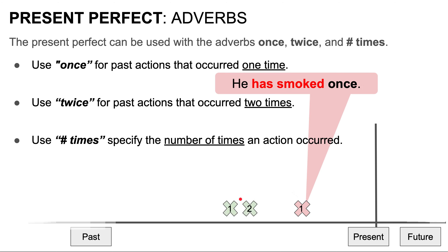Now we're going to look at adverbs of frequency that work with the present perfect. We use always for past states that continue or for past actions that routinely continue. For example, he has always wanted a car — that's a past state that continues. He has always called his mom — that's a past action that routinely continues. We use often for past actions that occurred by habit or routine many times. For example, he has often traveled to Mexico. And we use never for past actions that did not occur. For example, he has never smoked.